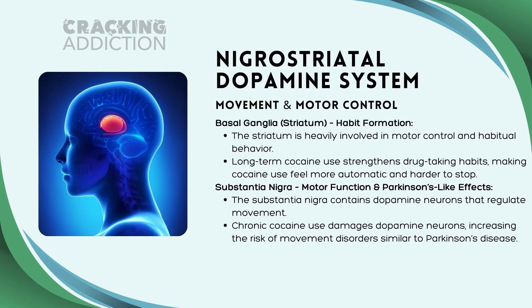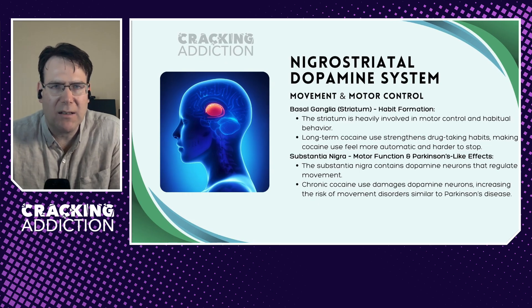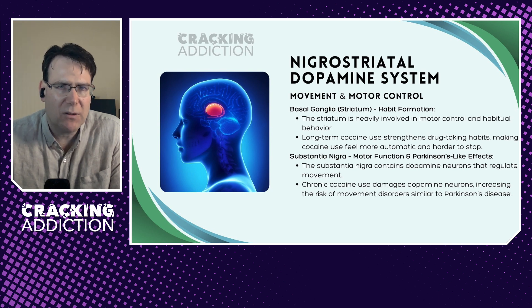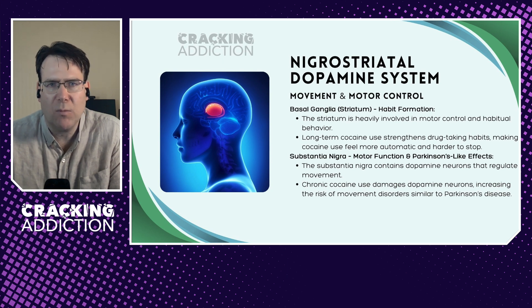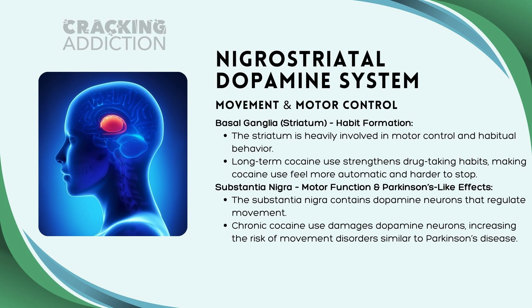The nigrostriatal dopamine system is the motor system. The basal ganglia, also known as the striatum, are key in the development of habits and are heavily involved in motor control. Long-term cocaine use strengthens drug-taking habits, making cocaine use feel more automatic and harder to stop. The substantia nigra contains dopaminergic neurons that regulate movement, and chronic cocaine use damages these neurons, increasing the risk of movement disorders similar to Parkinson's disease.